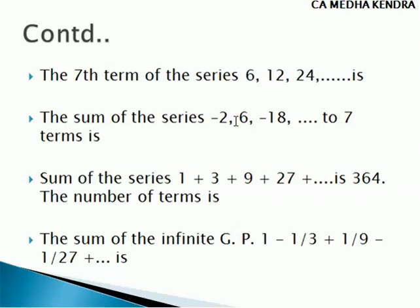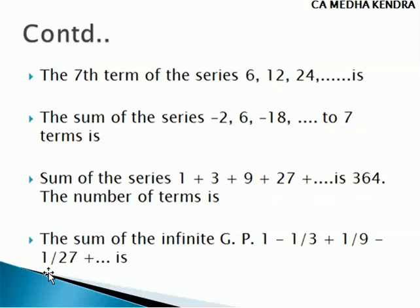The next question: the sum of the series 1 plus 3 plus 9 plus 27 is 364; find the number of terms. It is geometric progression with common ratio 3, so R is greater than 1. We have A equal to 1, R equal to 3, and the sum SN equal to 364. We find N using the formula SN equal to A into (R power N minus 1) divided by (R minus 1). For the sum of an infinite geometric progression 1 minus 1/3 plus 1/9 minus 1/27 and so on, we use the formula S infinite equal to A divided by (1 minus R).